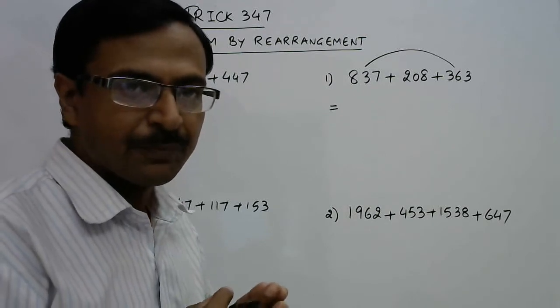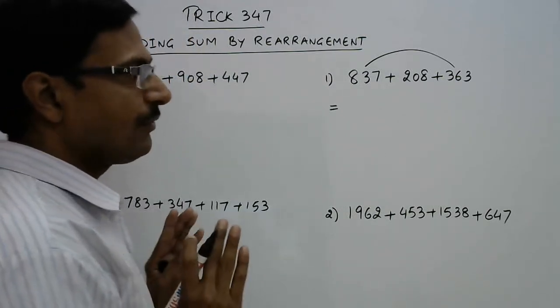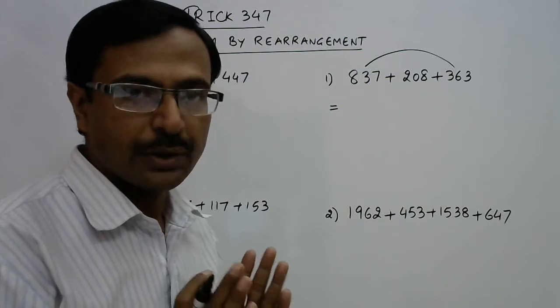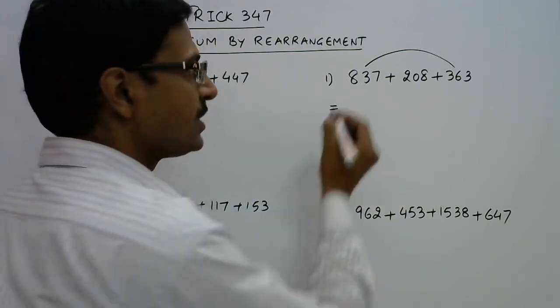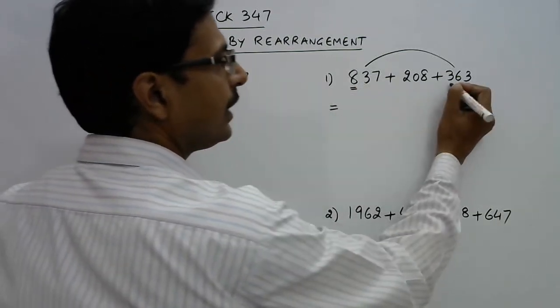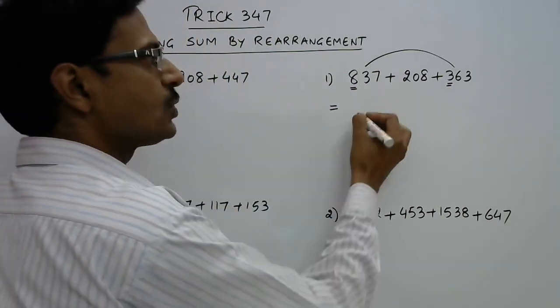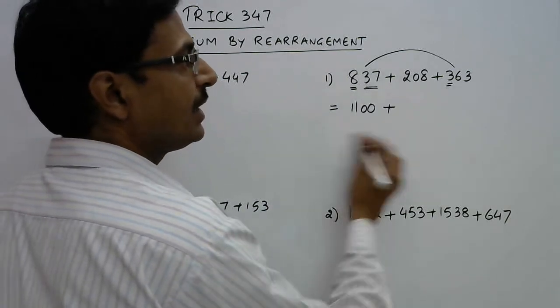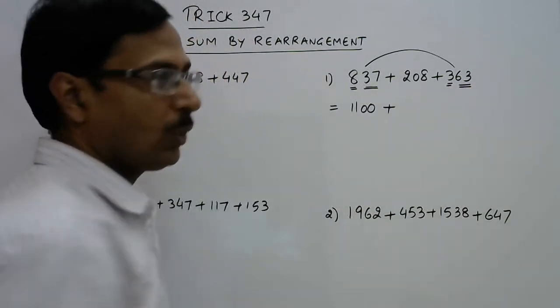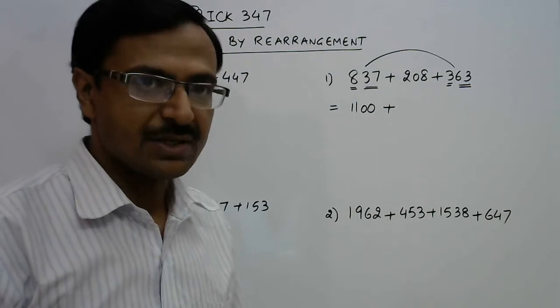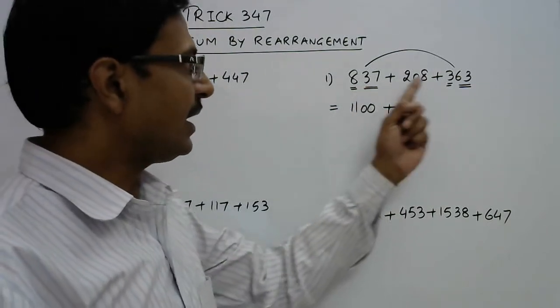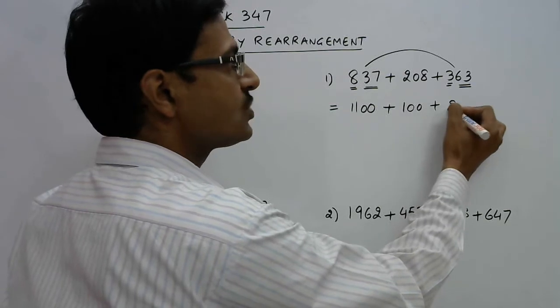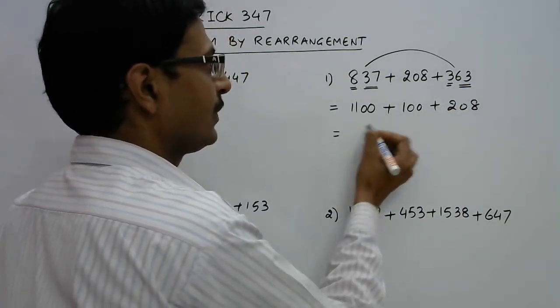These two numbers can be added orally. First, see the number of hundreds: we have 800 and 300, so 1100. Now we're left with 37 and 63. Oral addition of two-digit numbers is very easy - 37 and 63 add up to 100, and what remains is 208, so this is 1200 and 208.